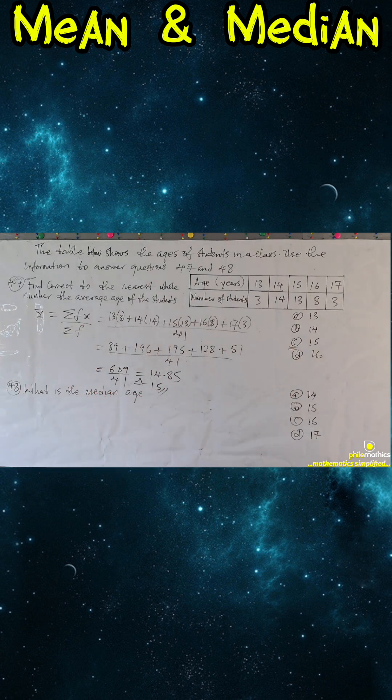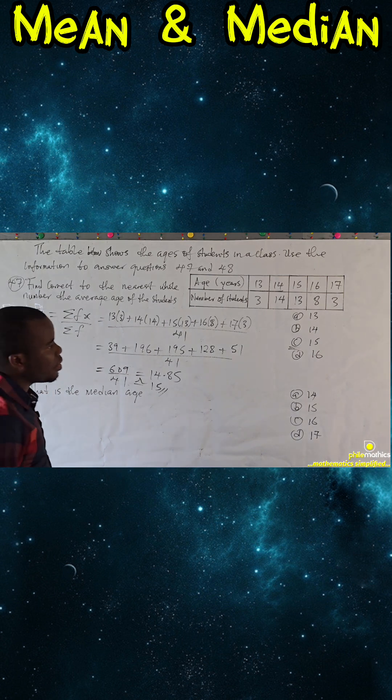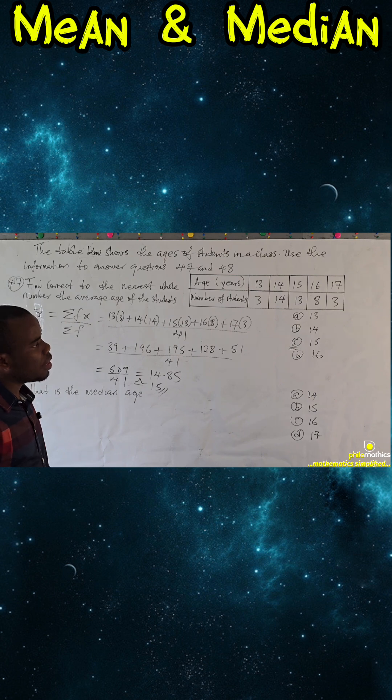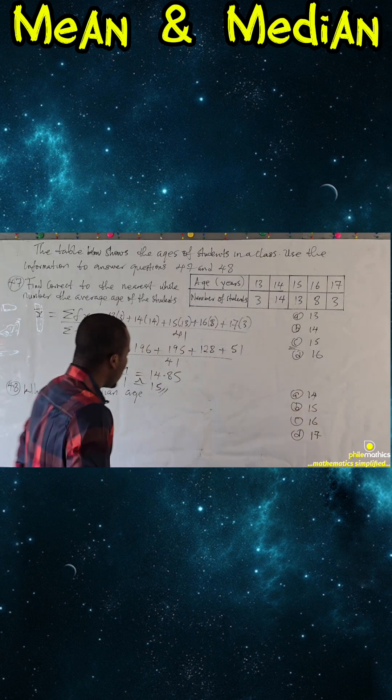For 48, we are asked what is the median age. To find the median age, we need to find the median position first. Since we have an odd number of frequency, our median position is simply n plus 1 over 2.